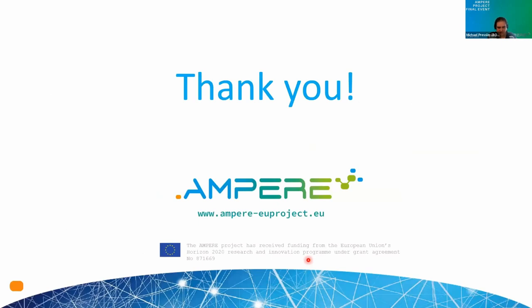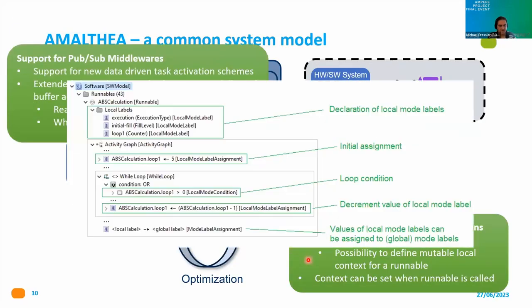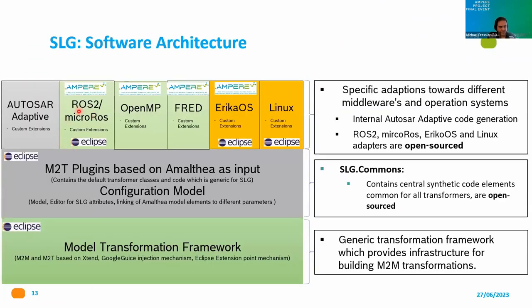That was the automotive use case. A question came in about the synthetic data generation: will it be made available by the AMPERE project? Yes — parts are already available online. The ROS2 and micro-ROS generators are online, ERIKA OS stubs are there, Linux is there, the framework, OpenMP — FRET is not yet public but we plan to make it available at some point during the project.